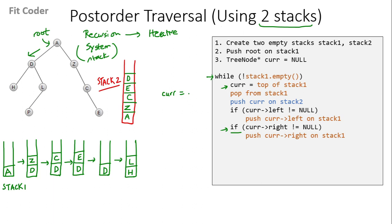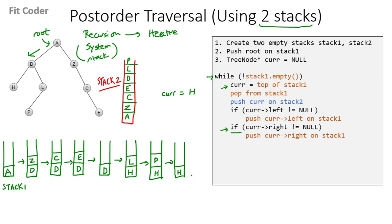In the next iteration, current becomes equal to the top of stack1, which is L. We pop from the stack and push current onto stack2. We check the left of L, which is P — we push it on stack1. The right of L is null, so that condition is false. Next, current becomes P — we pop it and push onto stack2. Left and right of P are both null. Next, current becomes H — we pop it, push onto stack2. Left and right of H are also null, so both if conditions are false.